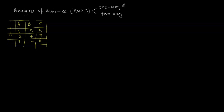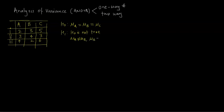My initial hypothesis is that the average change in blood pressure due to drug A equals the change due to drug B, which equals the average change due to drug C. The alternative hypothesis is that H0 is not true — meaning mu_A ≠ mu_B, or mu_B ≠ mu_C. You can also simply write that H0 is not true.